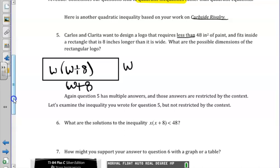So the area of this would be w times w plus 8. Now, instead of being equal to 48 inches squares, we want it to be less than. So our inequality would be w times the quantity w plus 8 is less than 48.